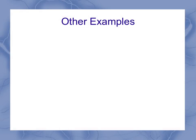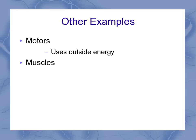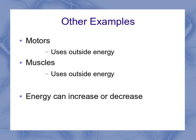Some other examples: motors. If you've got some sort of motor attached to the system, it's really not a closed system because it uses outside energy to make that motor work. Similarly, muscles — you could think of muscles as a type of motor; again, you use outside energy. In these cases, energy of the system is often increased — your motors or muscles help get more mechanical energy in. But you could also have a decrease in mechanical energy if you're using those muscles to slow an object down.